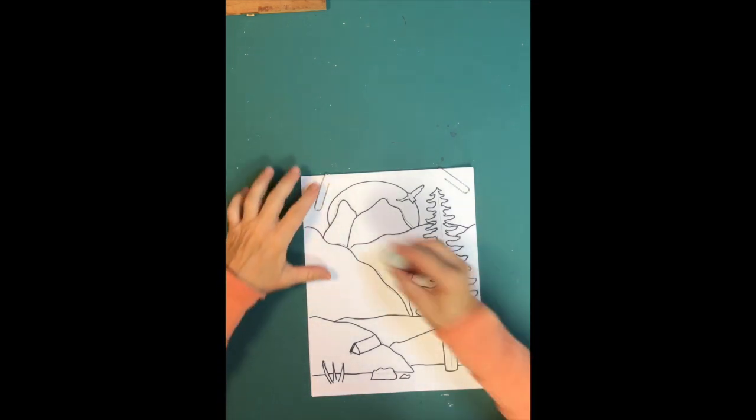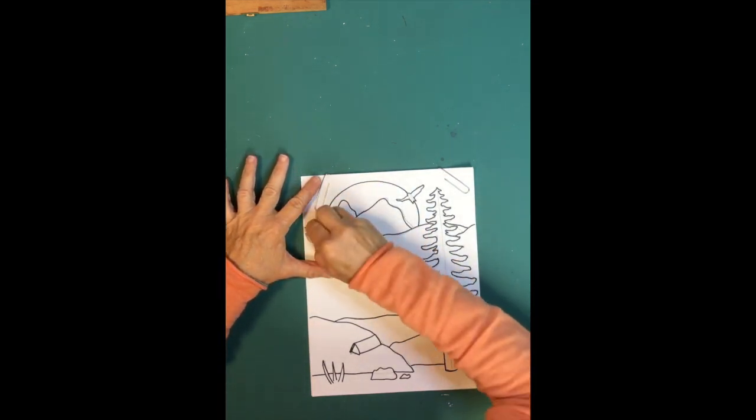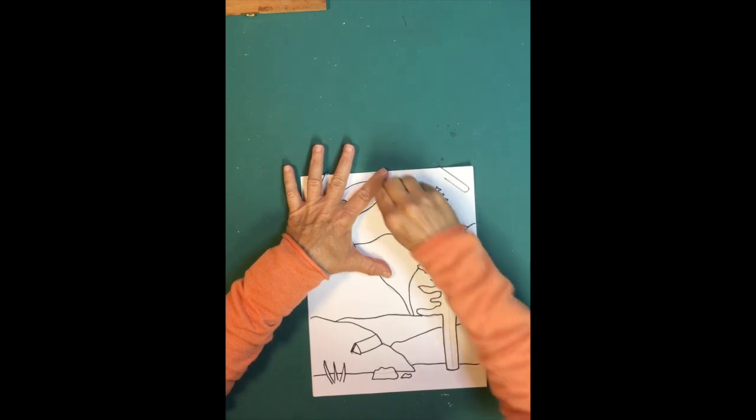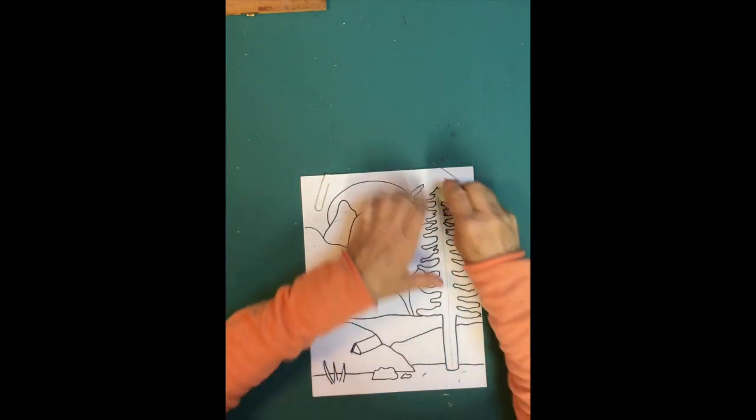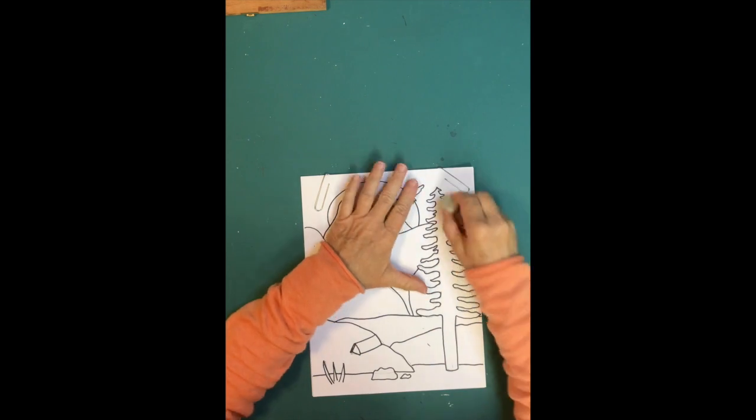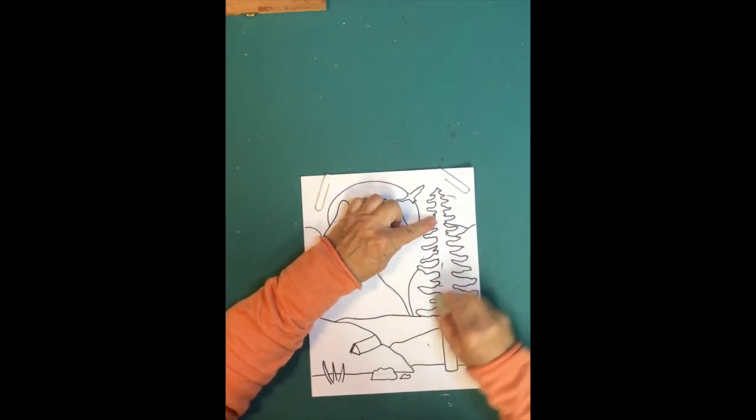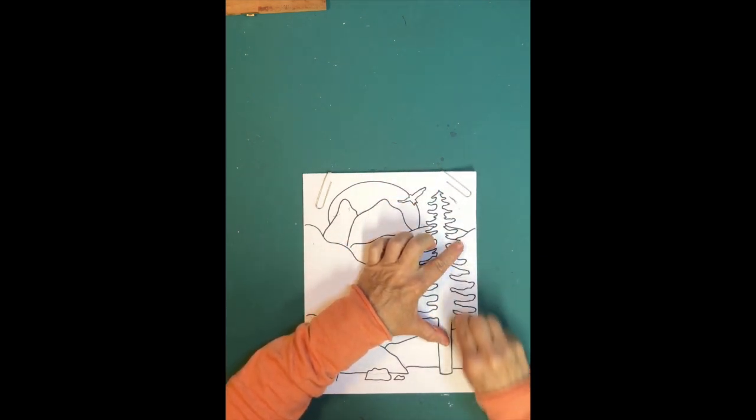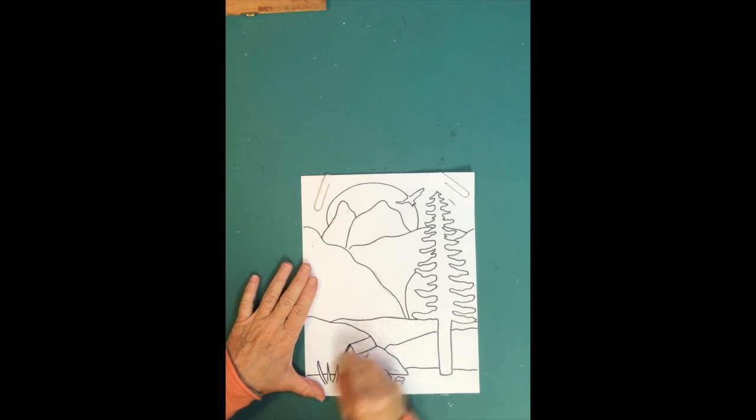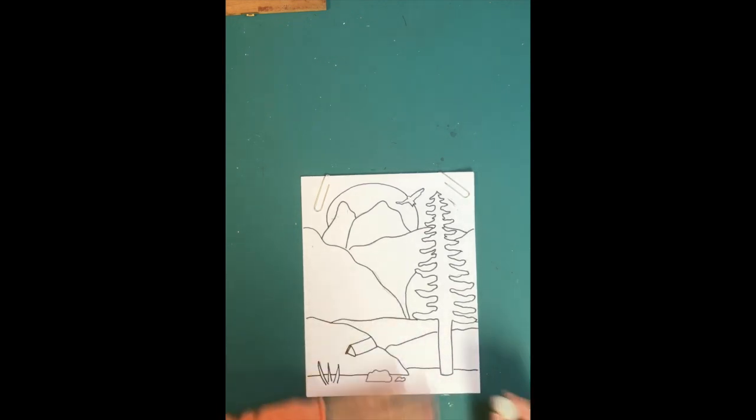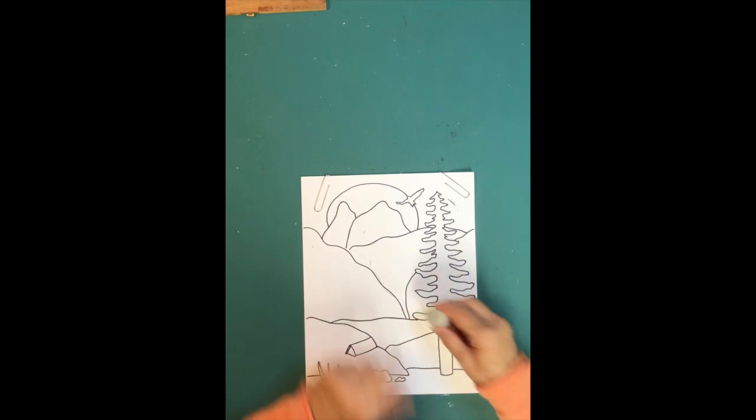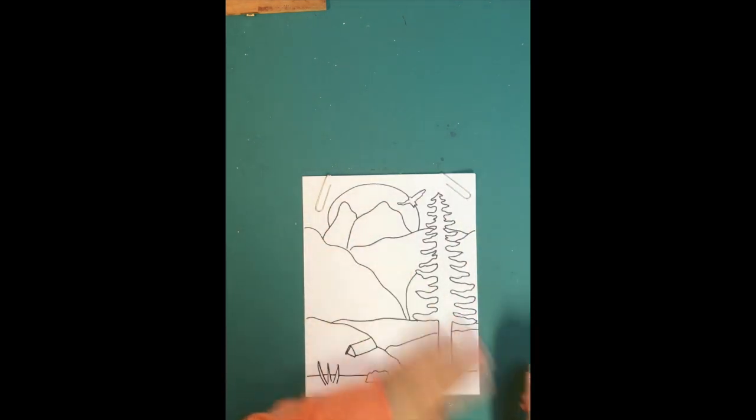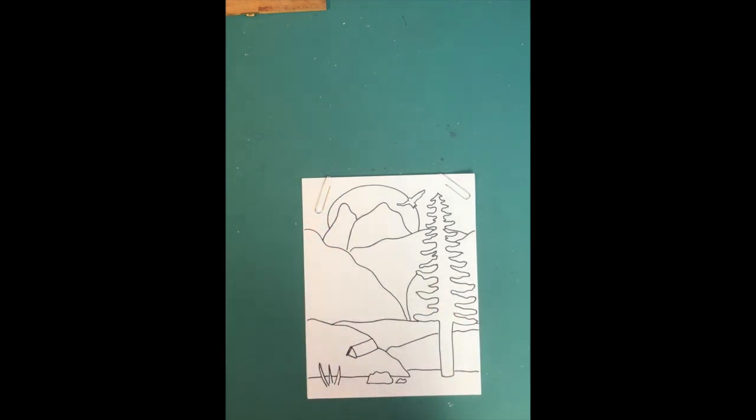So now you can go ahead and take your eraser and erase everything that you see. Once you color it, you won't see any of these lines. But now if you erase all of this, you'll see that the tree's right there. You just go through and erase everything. You have a nice coloring page that you can have so much fun coloring, and I'll show you one that I colored.